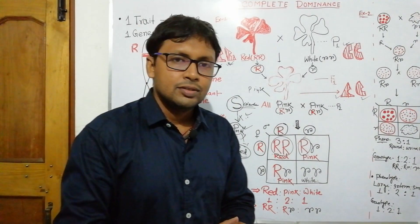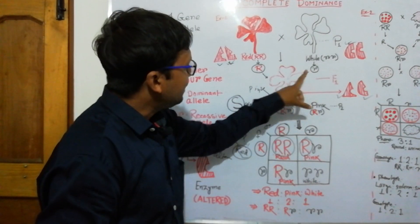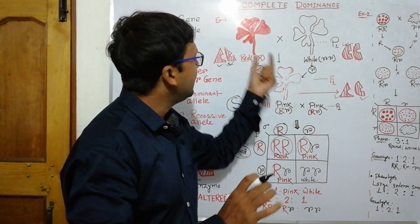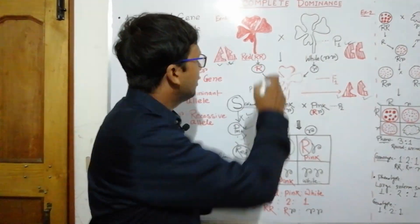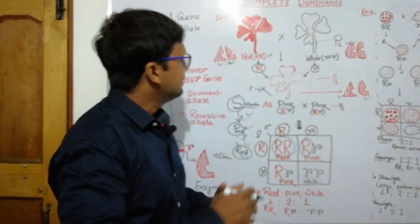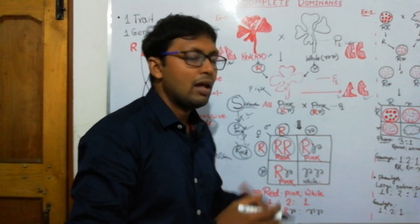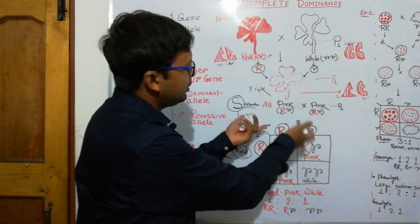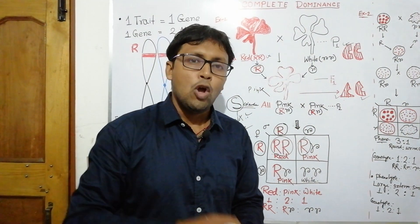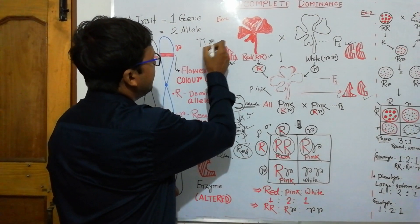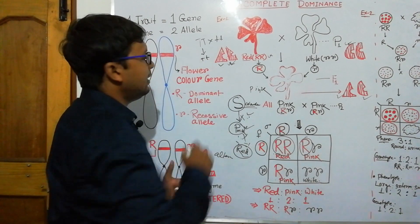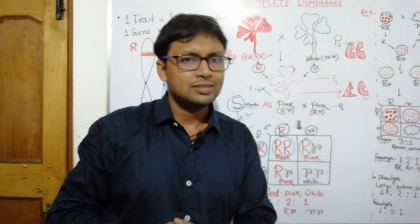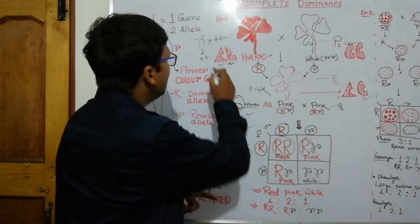If the small r allele were functional like the capital R wild-type allele, then all F1 flowers would be red because both alleles would be functional. This is what happens in the case of tall plants — when capital T is crossed with small t, the small t product and capital T product are more or less the same, so small t is not truncated and it does not affect the phenotype.